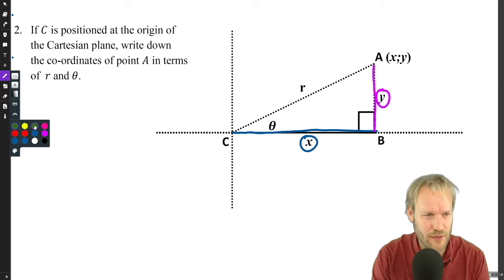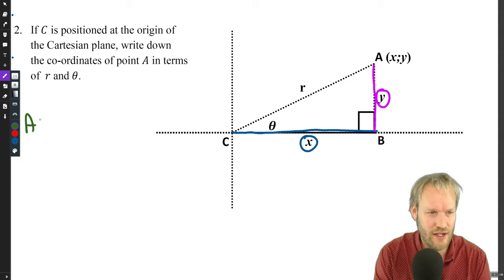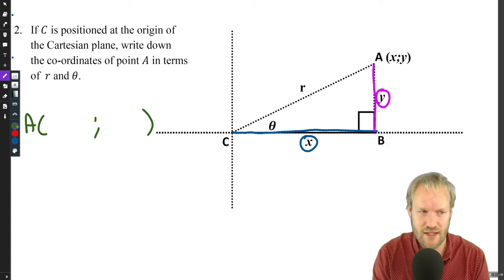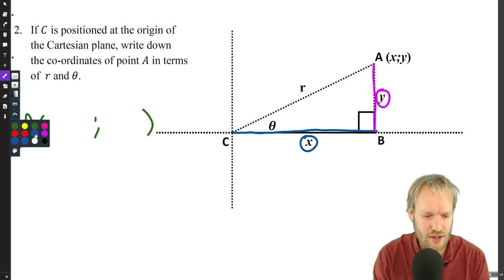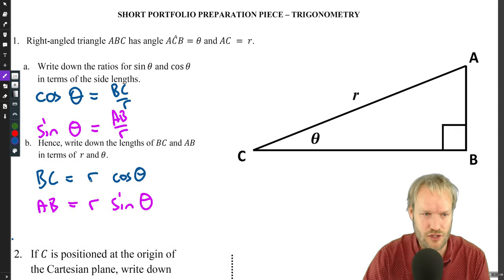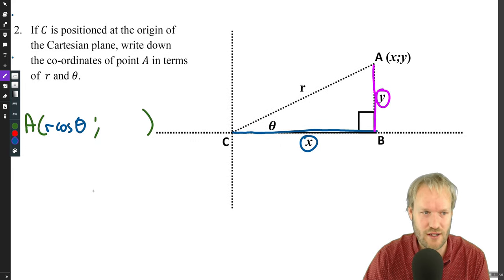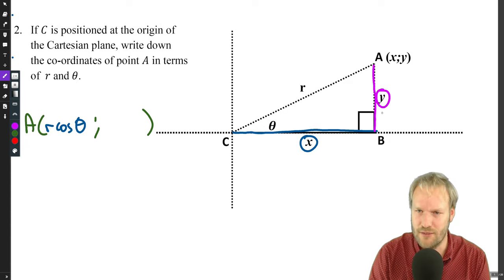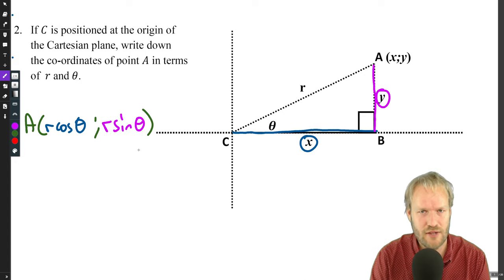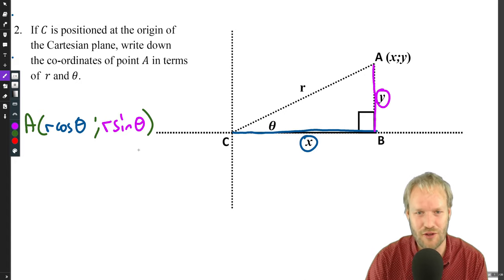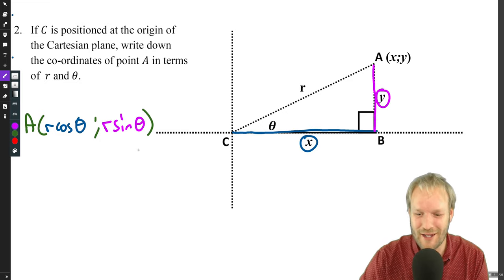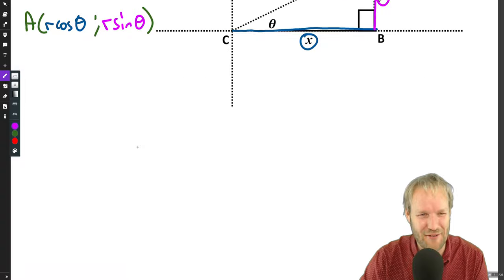If we're trying to find A, well X is just what BC is. BC was R cos theta. And Y, that's AB, and that's just R sine theta. Have an idea of where we're going with this? Maybe you don't need the video anymore. Either way, hopefully you're having a bit of fun in the process.